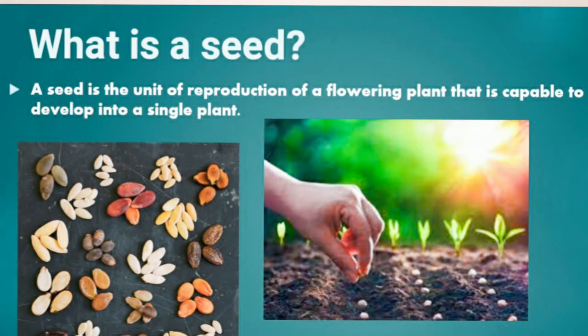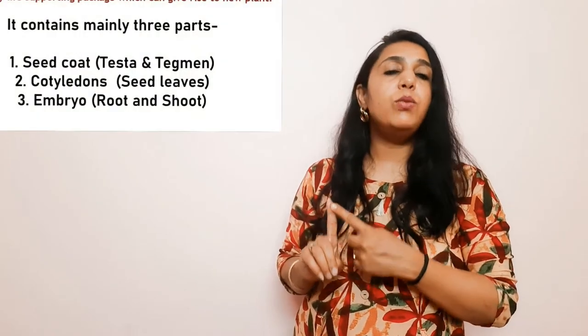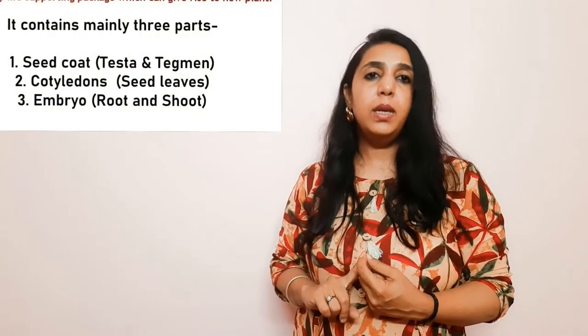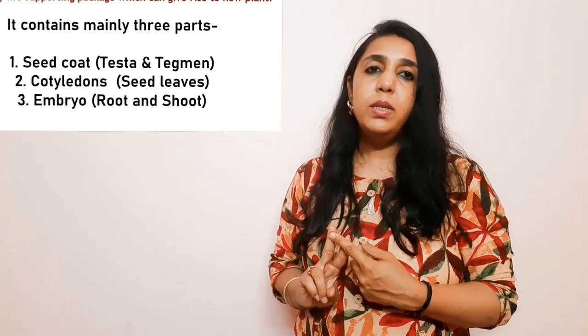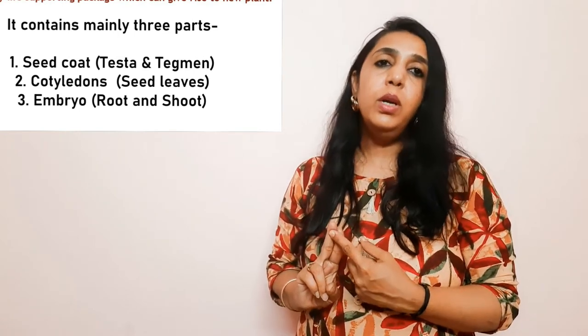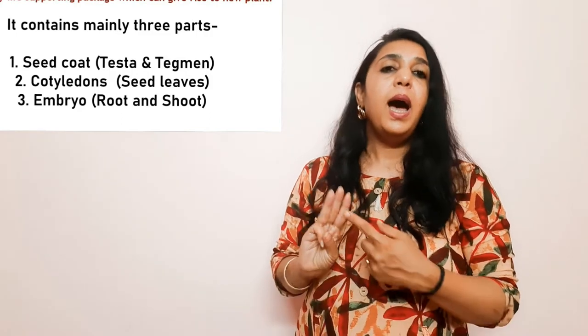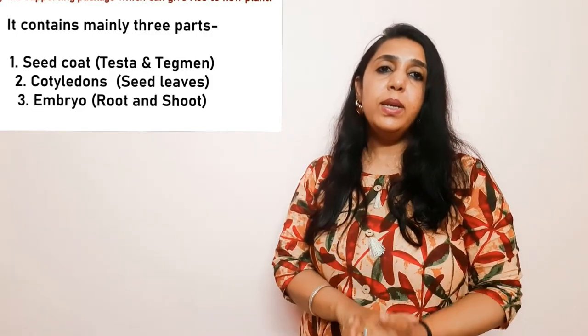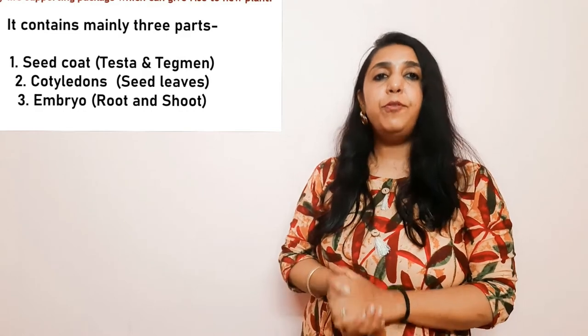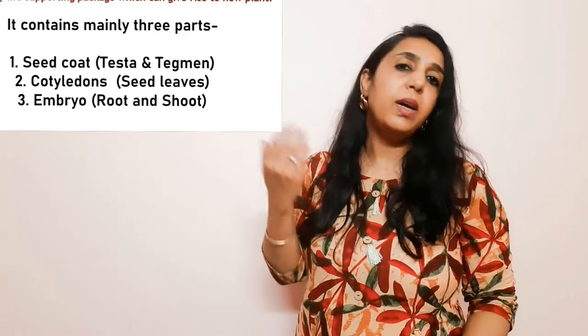We have discussed what a seed is. A seed is the unit of reproduction of a flowering plant that is capable to develop into a single plant. Then we have done about the parts of the seed. The seed has three parts: the seed coat, which is the outer covering of a seed that protects it; cotyledons, which provide food to the growing plant; and the embryo, from which the root and shoot come.